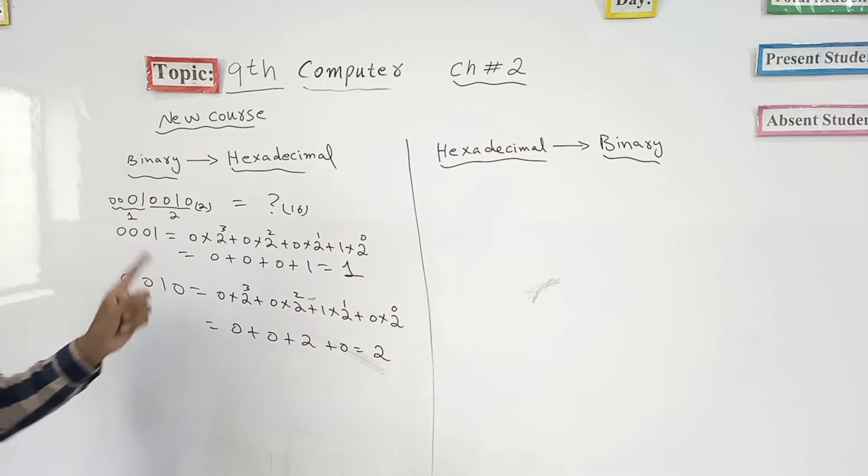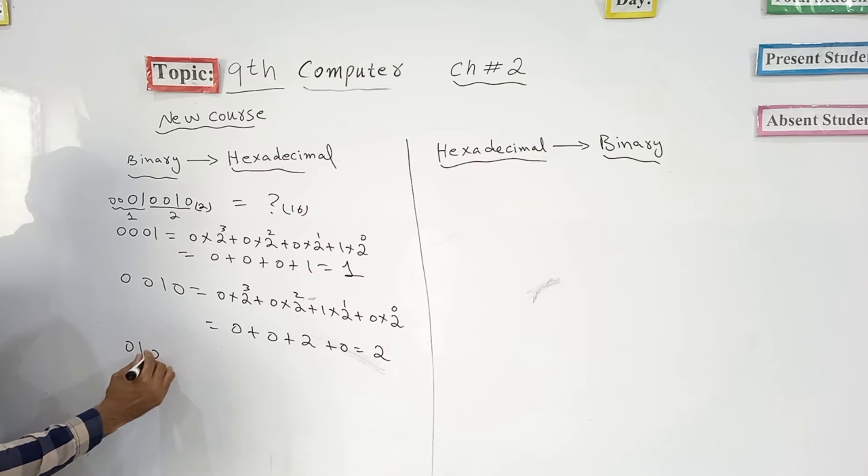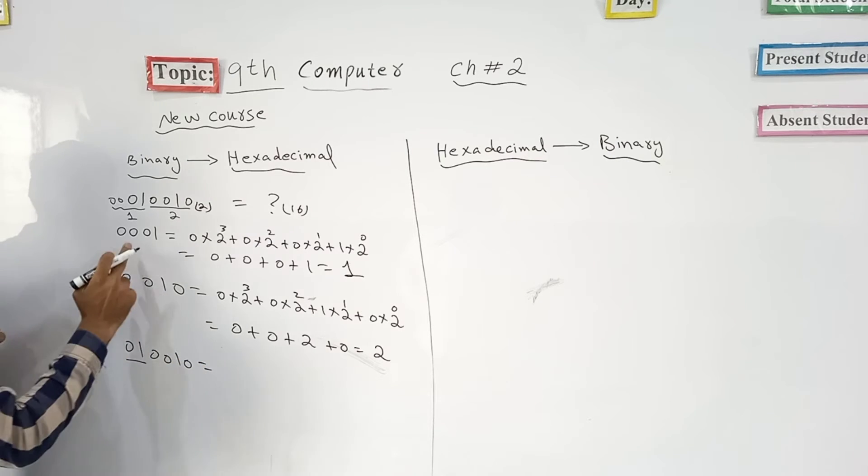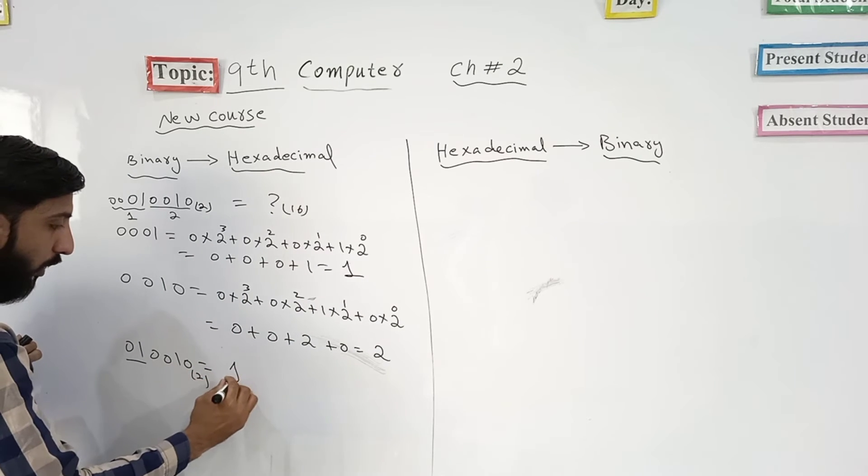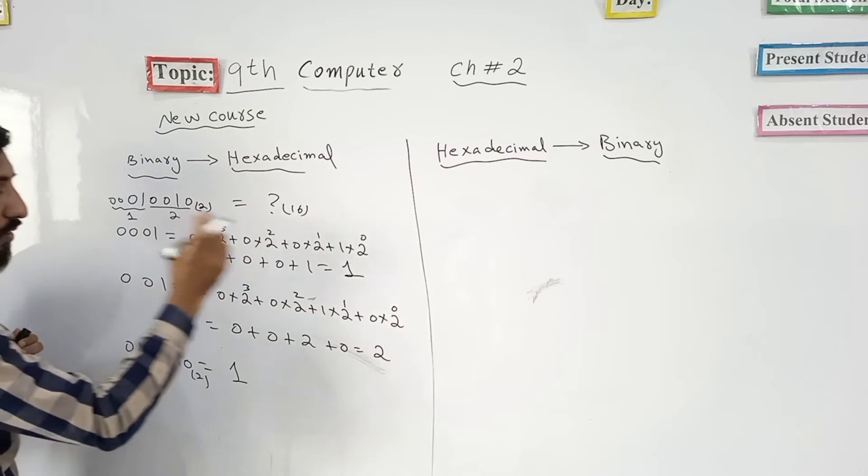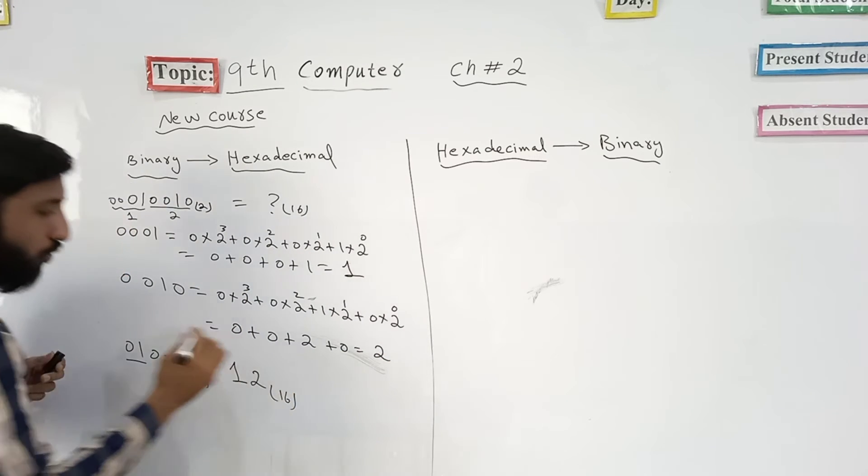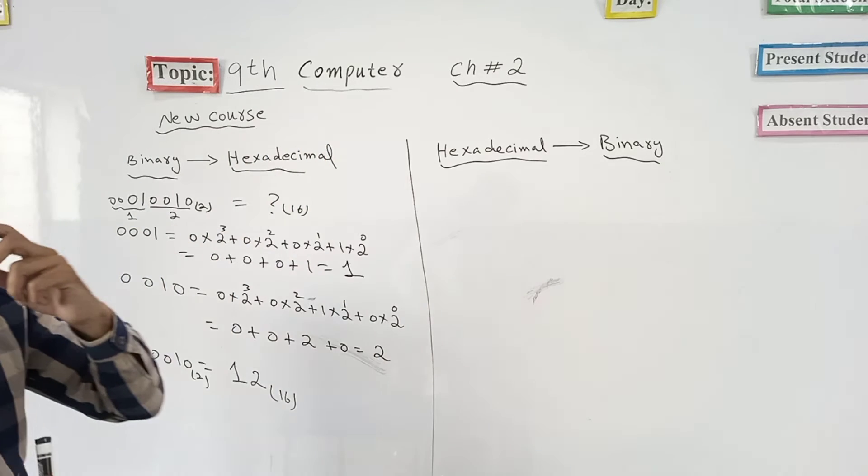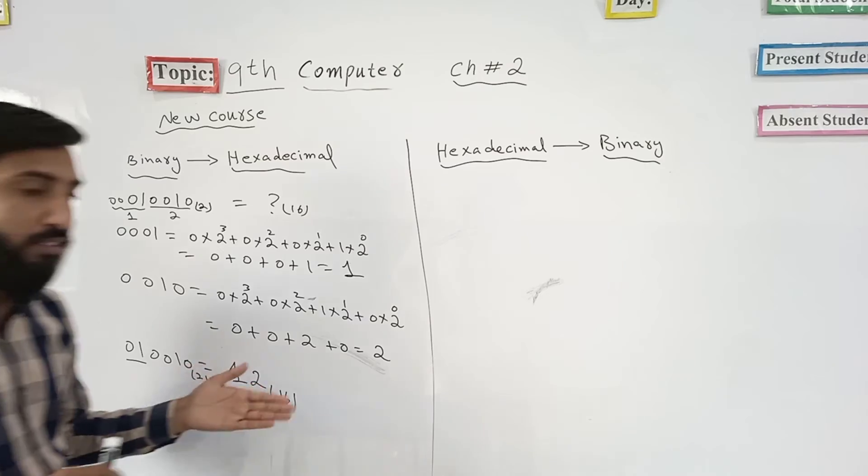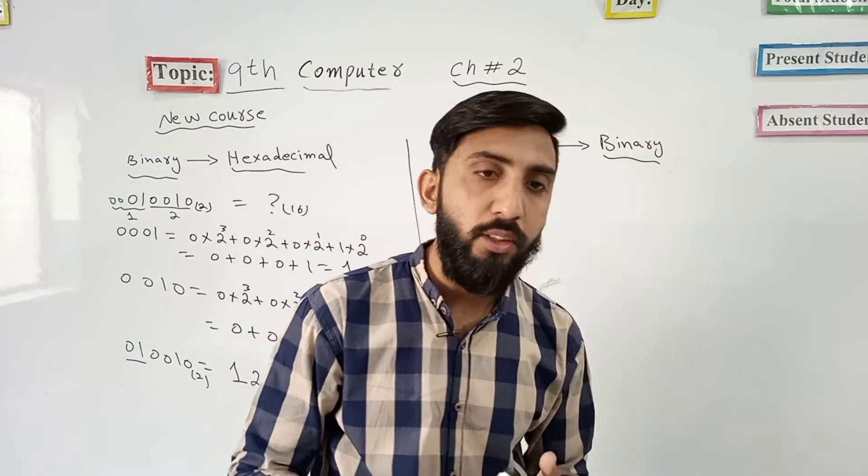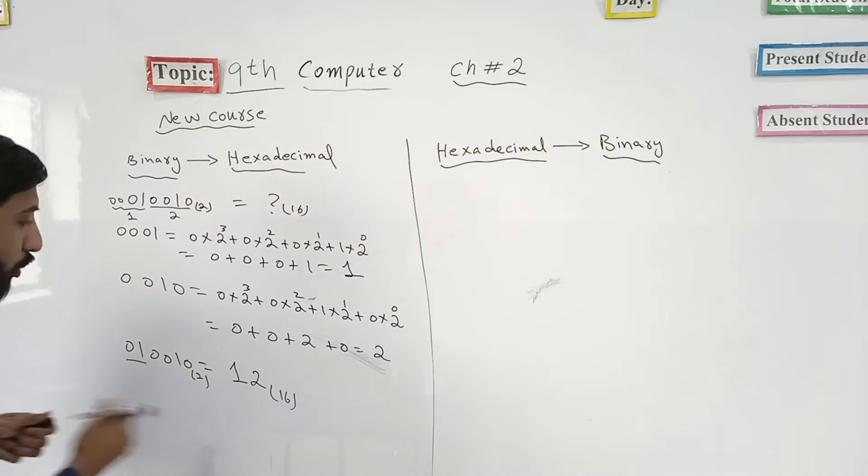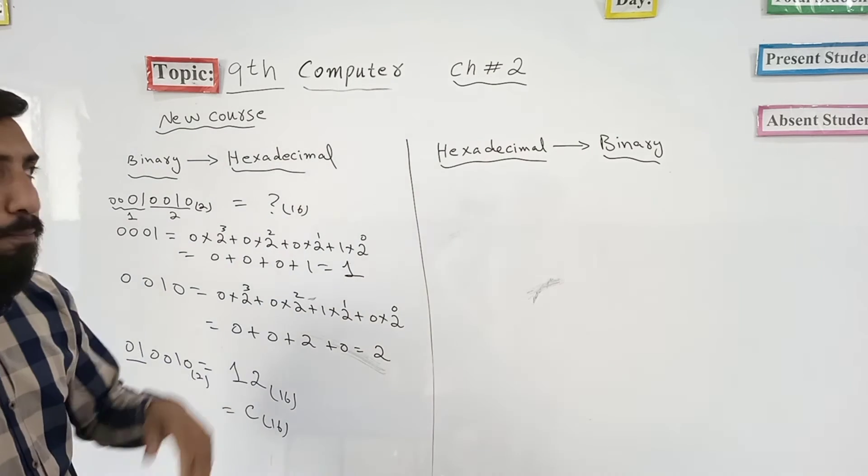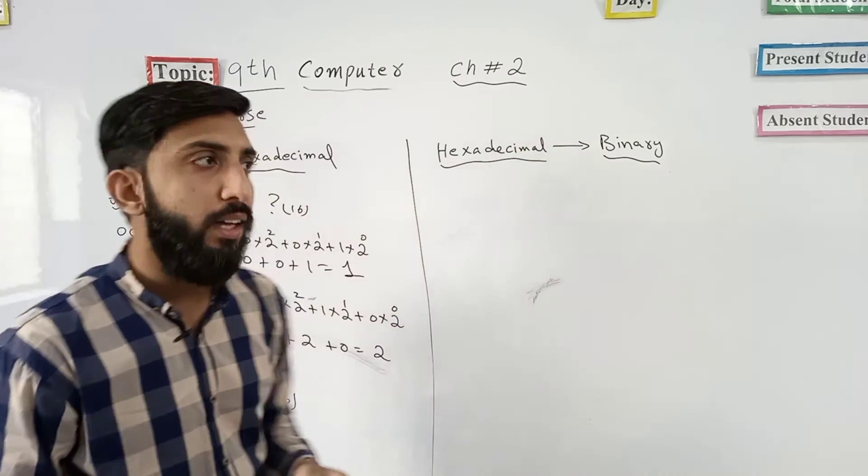Which means that we have a group. Now the first position numbers are 0, 0, 1, 1. In other positions, 0, 0, 1 equals 1. This method is related to hexadecimal. C is 61. This means it's a hexadecimal number. That's how we relate to hexadecimal.